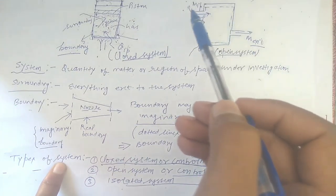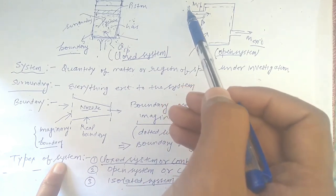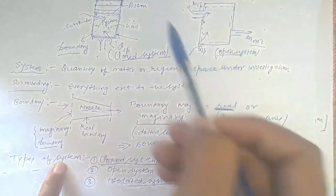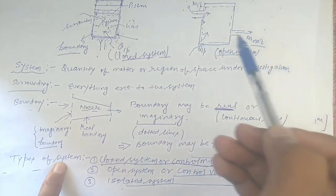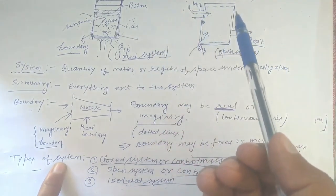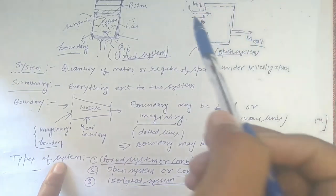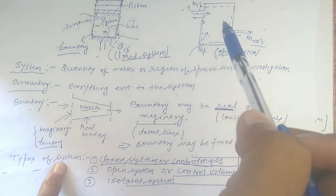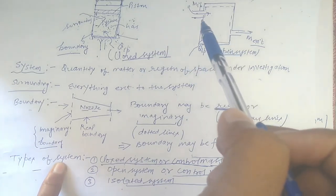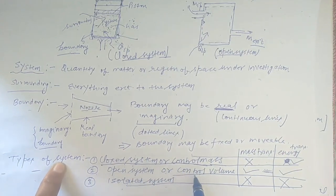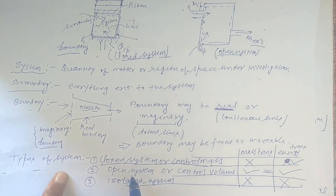Now let's talk about the open system. Open system's other name is control volume. Consider a basic system where fluid enters from one side and fluid is leaving from the other side. For example, a water geyser — cold water enters and hot water comes out. When we plug in the geyser, electrical work transfer also happens. So in an open system, both energy transfer and mass transfer occur.